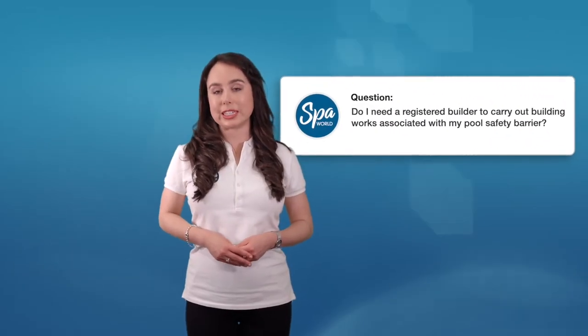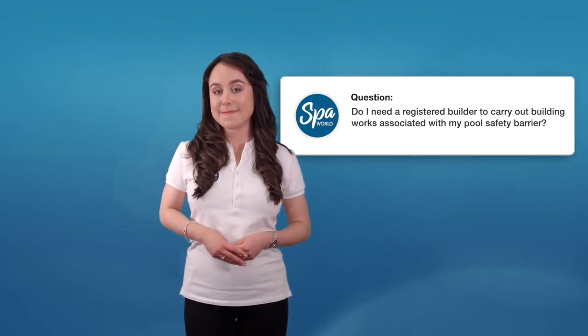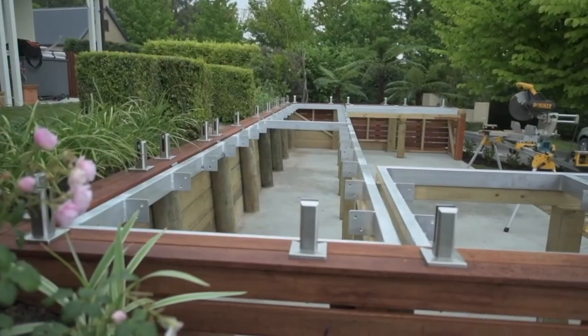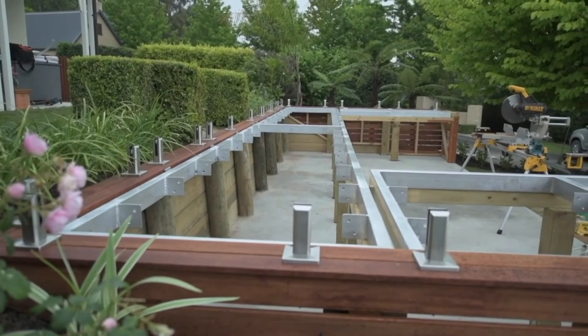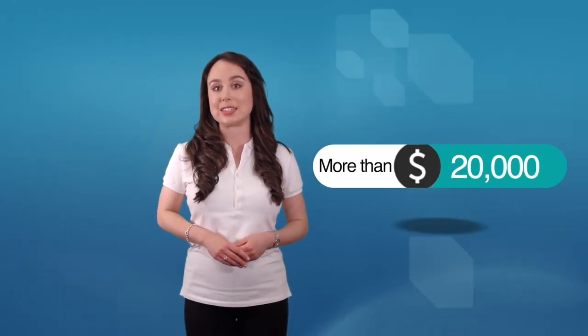Do I need a registered builder to carry out building works associated with my pool safety barrier? Registration as a building contractor is not required to install a new spa or fence in WA. Although you can choose to be an owner builder, you will need to apply for an owner builder's licence for work that's valued at more than $20,000.